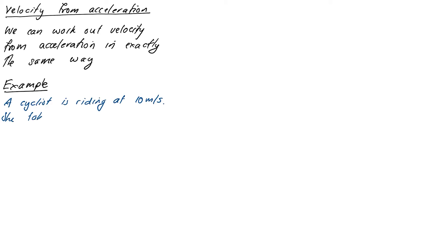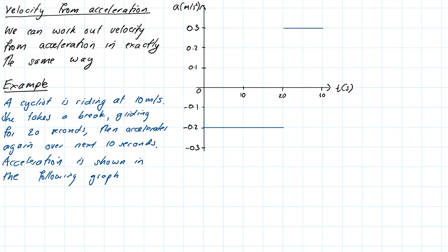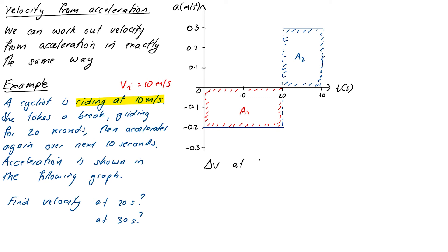Let's take a problem: a cyclist is riding at 10 meters per second approaching a traffic light. She glides for 20 seconds to rest her legs, then when the light goes green she accelerates again over the next 10 seconds. The acceleration graph shows a negative acceleration of negative 0.2 meters per second squared during the first 20 seconds of slowing down, then a positive acceleration of 0.3 meters per second squared during the final 10 seconds of speeding up. What is the cyclist's velocity at 20 seconds and at 30 seconds?